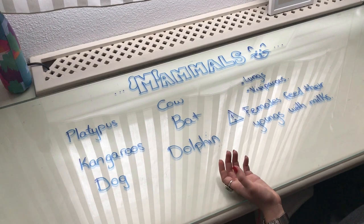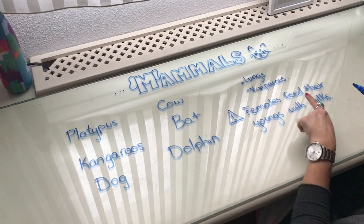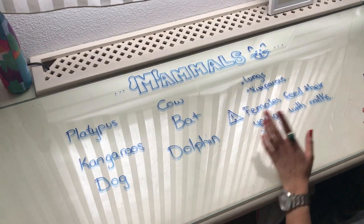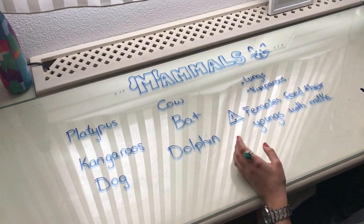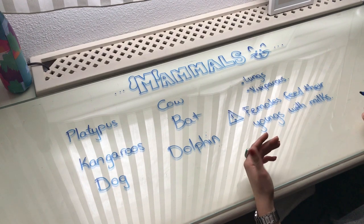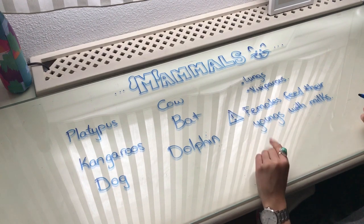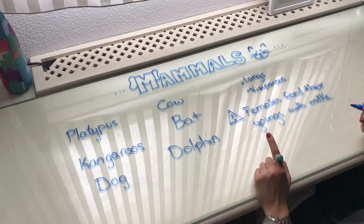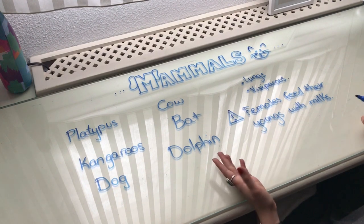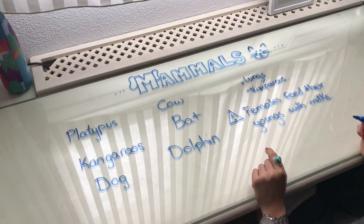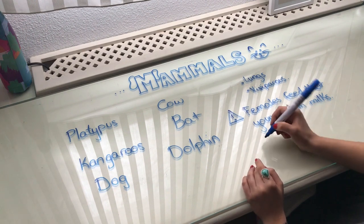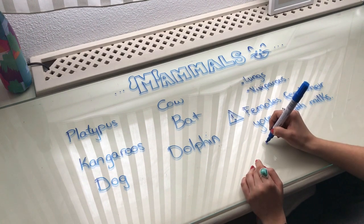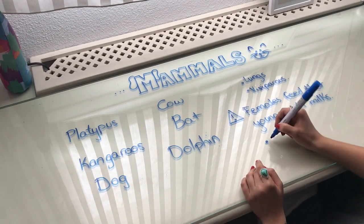Mammals, after they are fed with milk by their mothers, when they grow up they can be three different types. You already know this but we are going to review. The first type, depending on what they eat, is that they can be herbivores.